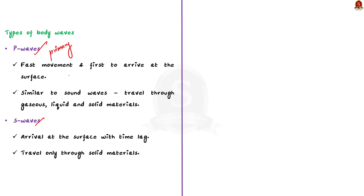Firstly, let us see about the P waves. They move faster and they are the first to arrive at the surface. And that is exactly why they are called as primary waves. These P waves, they are similar to sound waves. So, they travel through gaseous, liquid and solid materials.